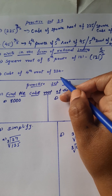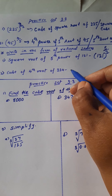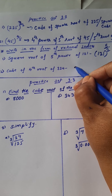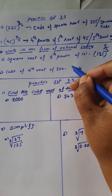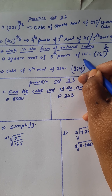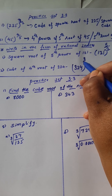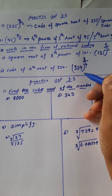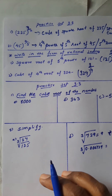Next, it is the cube of the 4th root of 324. The base is 324. The 4th root gives 1 upon 4 and the cube gives power 3, so we write 324 raised to 3 upon 4.